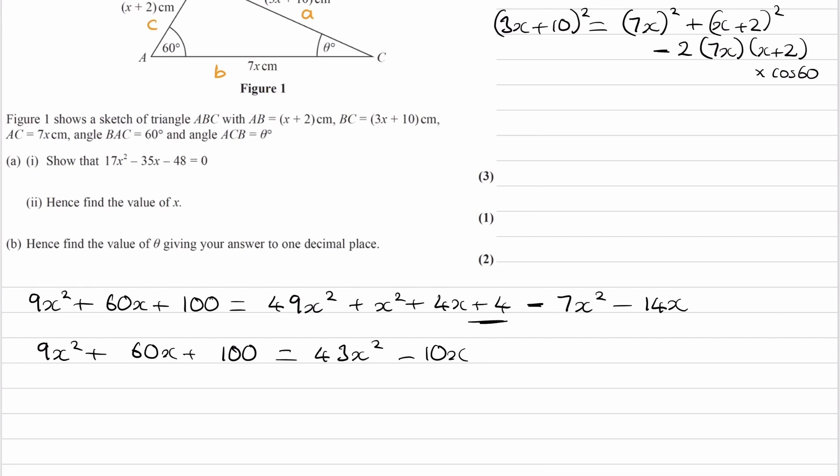And finally, the plus 4 is just by itself. Now we'll bring all of this to the right-hand side. So 43 minus 9 is 34. Minus 10 minus 60 is minus 70. 4 minus 100 is then minus 96.